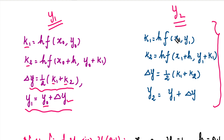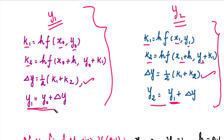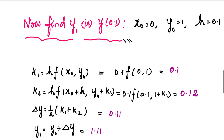For the y₂ calculation, we use the same formula as the first step — again involving k₁ and k₂. But in the second formula, x₀ and y₀ are replaced by x₁ and y₁. The delta y formula is the same, and y₂ equals y₁ plus delta y, just as y₁ equals y₀ plus delta y.